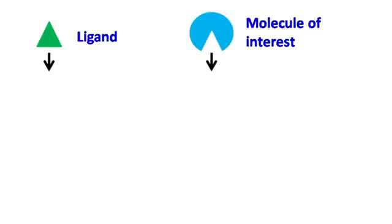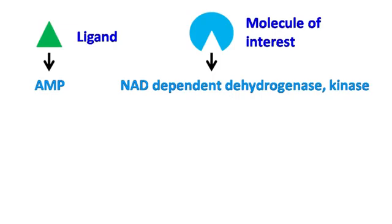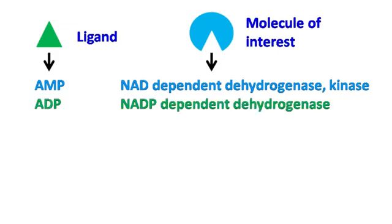Let's see different examples of ligand and the molecule of interest that can be purified with affinity chromatography. AMP can be used for the purification of NAD-dependent dehydrogenase and some kinases. ADP can be used for the purification of NADP-dependent dehydrogenases.